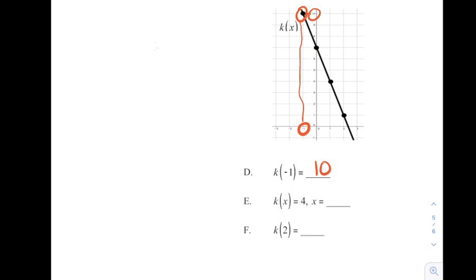We're doing the same kind of thing here in part F. 2 is the input. So we look for that on the x-axis. And that point has a y value of 1. So 1 is the output.